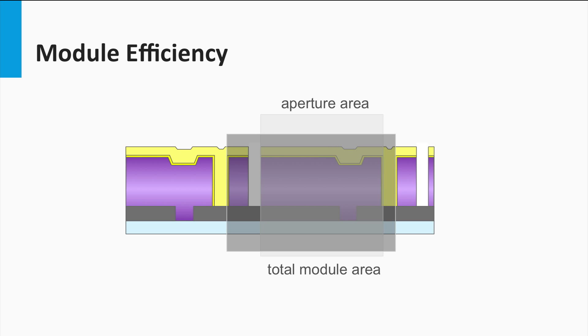Total area means that the entire module area is considered when calculating the conversion efficiency. This area includes the dead area created by interconnection and the edges of the module.